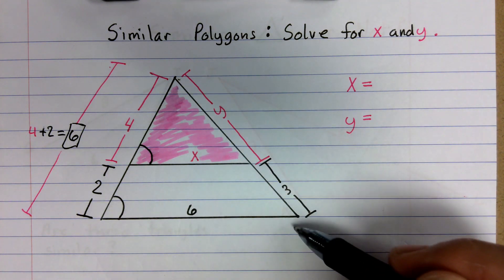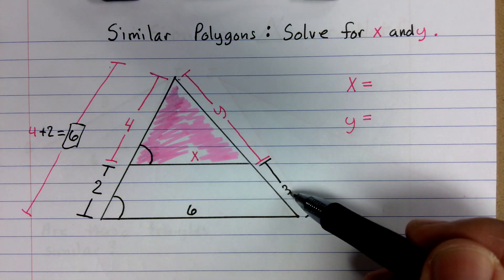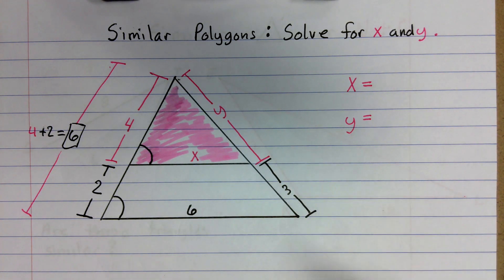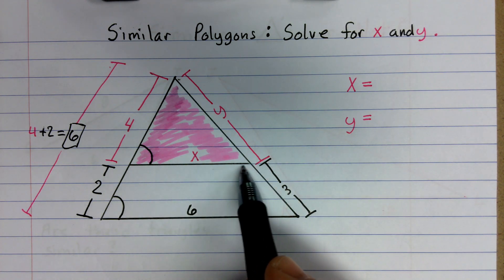Over here on this side that we see, we could do the same thing. If we wanted to put it together, we could say y plus 3 gives us this whole side of the triangle over here. Now, we are going to try to find y, this value right here, and we're also going to try to find x, which is this value right here.